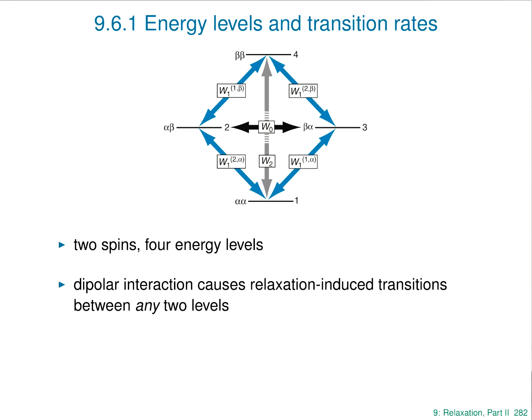Each of these transitions has a different rate constant associated with it. They're labelled W with a subscript. W1 are rate constants for processes in which the quantum number changes by 1 — the same as the allowed transitions. W2 is the one going from alpha-alpha to beta-beta, for which delta-m is 2. W0 is the one that goes from alpha-beta to beta-alpha, where delta-m is 0.